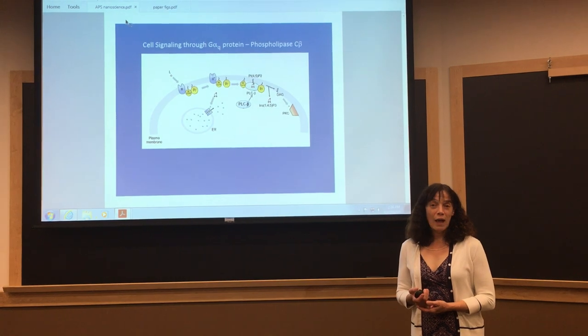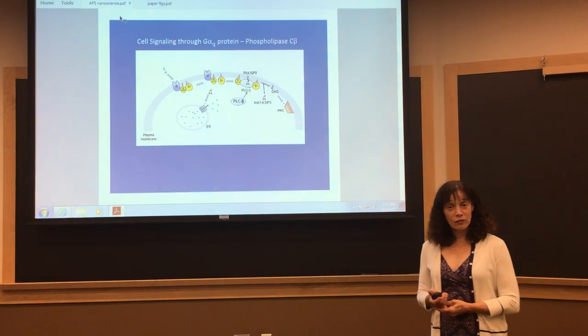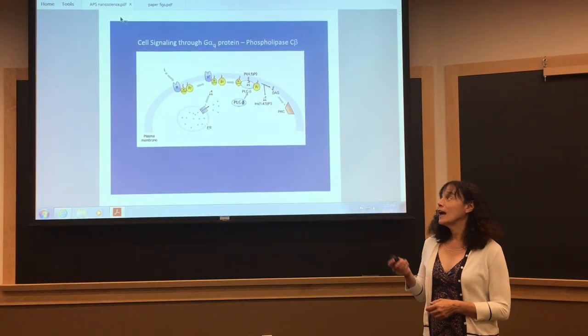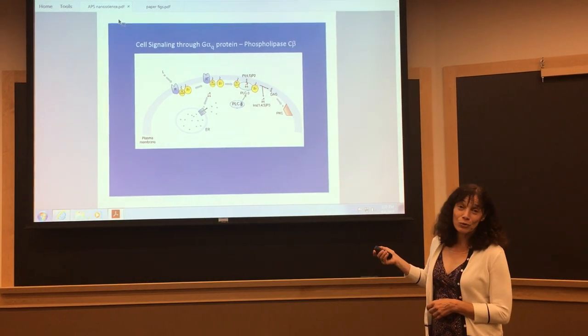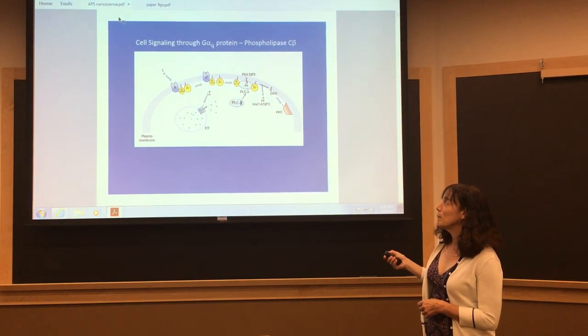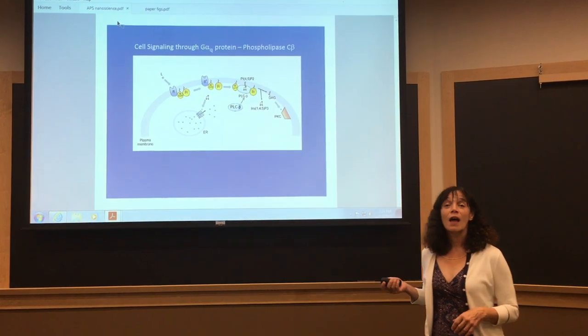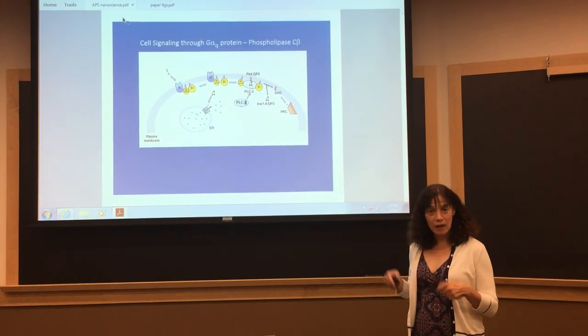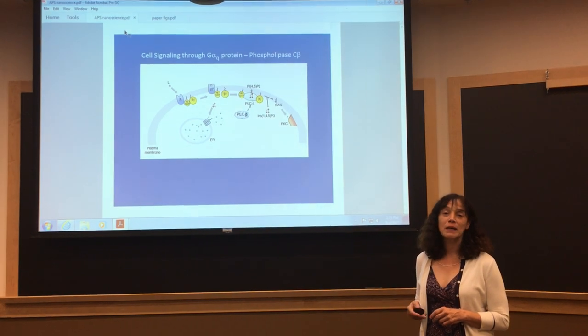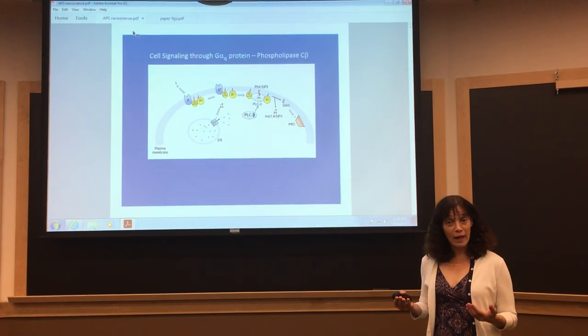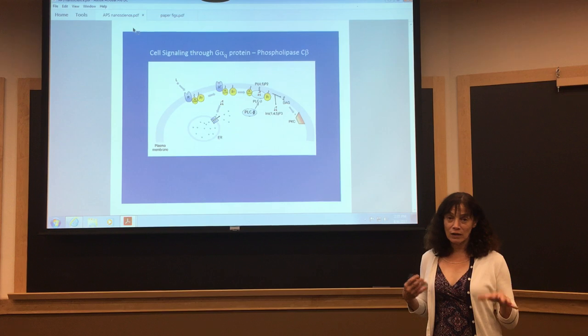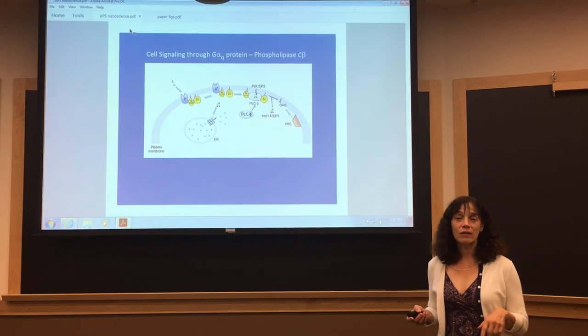So what our lab is interested in is cell signaling through phospholipase C. And here is just a cartoon of the signaling pathway of phospholipase C, and it's a G protein-coupled protein enzyme. And what it does is it will respond to extracellular signals like dopamine and acetylcholine to release intracellular calcium, which then causes the activation of a lot of calcium-sensitive enzymes.